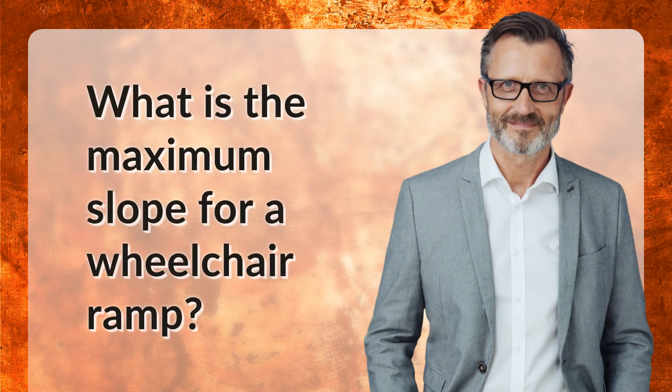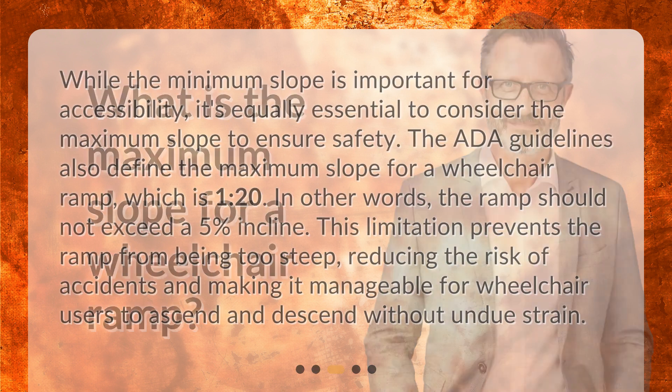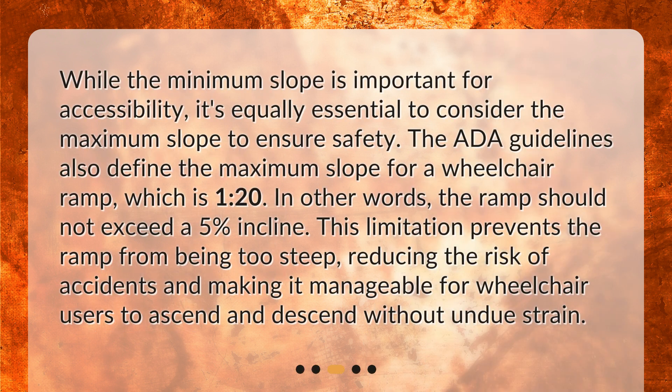What is the maximum slope for a wheelchair ramp? While the minimum slope is important for accessibility, it's equally essential to consider the maximum slope to ensure safety. The ADA guidelines also define the maximum slope for a wheelchair ramp, which is 1:20. In other words, the ramp should not exceed a 5% incline. This limitation prevents the ramp from being too steep, reducing the risk of accidents and making it manageable for wheelchair users to ascend and descend without undue strain.